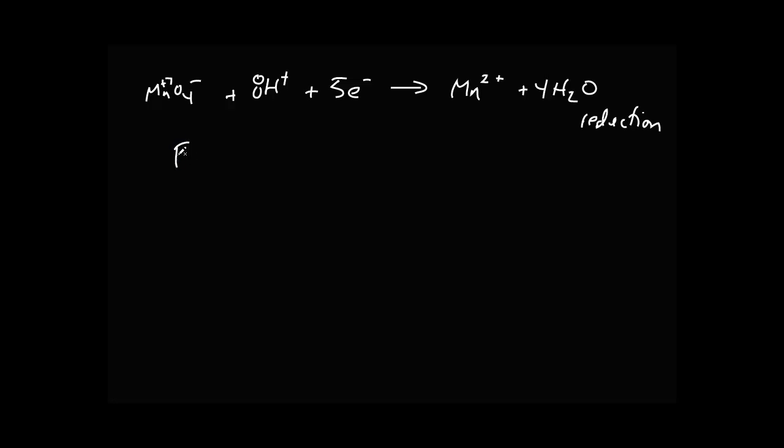Now let's look at the oxidation half-reaction. The FAS was told to us that we have iron 2+ and what's formed is Fe3+ and that's just with the loss of one electron.